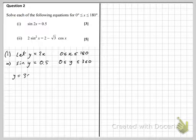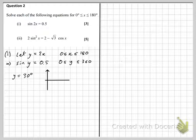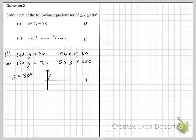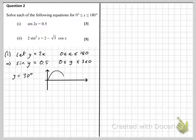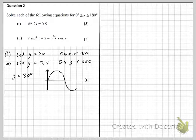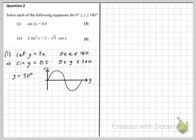If we inverse sine both sides of the sine y equals 0.5 equation, we get 30 degrees as our principal value. Now we just need to check whether there are any other values of y in the range 0 to 360 for which the sine of that angle is 0.5.